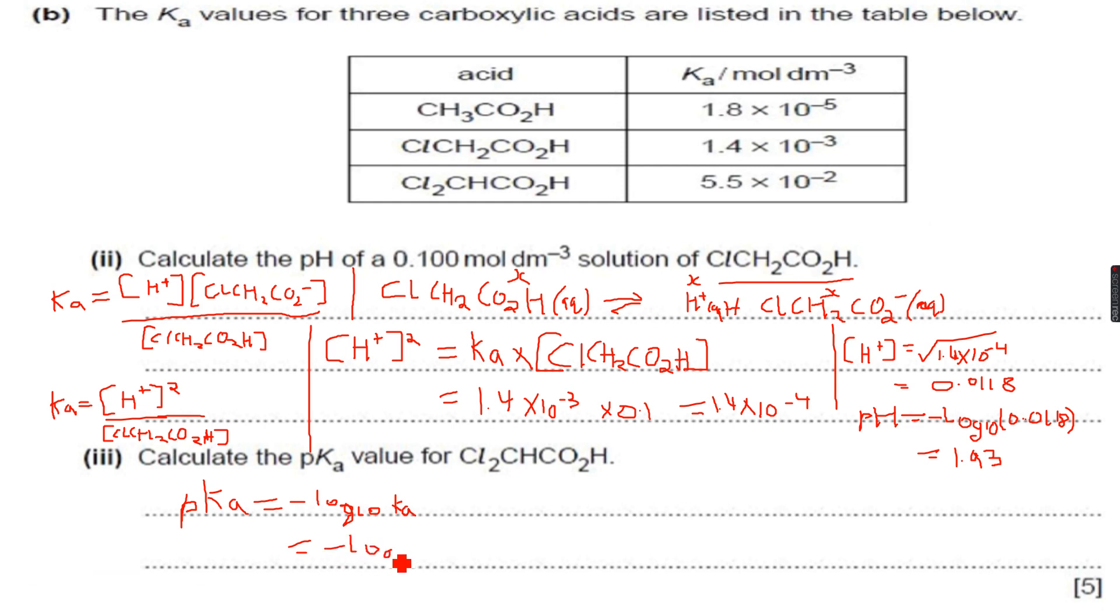Negative log 10 of, this is the value given to me, 5.5 into 10 to the power of minus 2. So I write 5.5 into 10 to the power of minus 2, which is equal to 1.26.